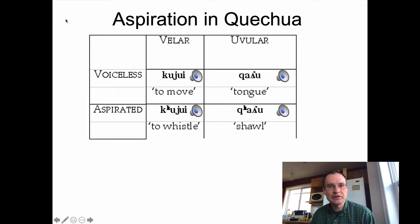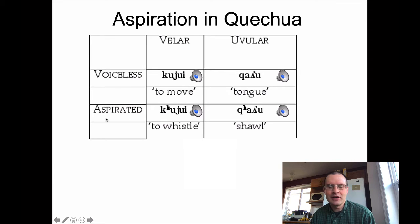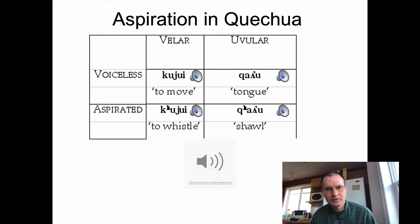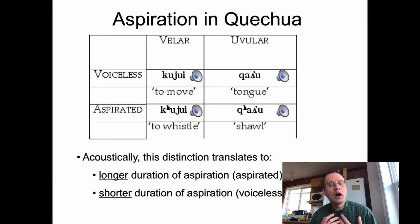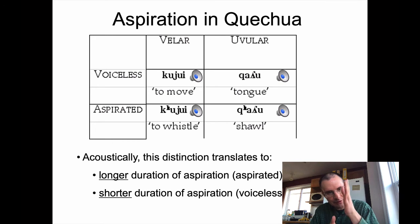I'll give some examples of aspiration in Quechua — some nice examples where it's easy to hear. These are velar and uvular stops: this one is labeled as voiceless but is basically unaspirated, or less aspirated than this version of the stop. Acoustically, the distinction we're looking for is basically longer duration of aspiration — a longer period of time between the release of the stop closure and the beginning of voicing. That's aspirated. Shorter duration, maybe no aspiration at all — those are what we call voiceless or unaspirated stops.